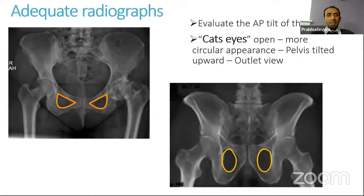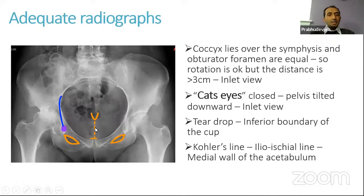In an inlet type of view, the coccyx is quite far away from the symphysis pubis and the obturator foramen are almost completely closed. Again, we don't want to be templating on these types of X-rays. We need to identify certain important landmarks.